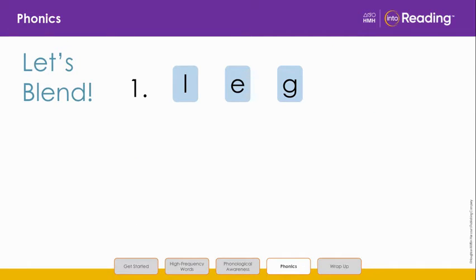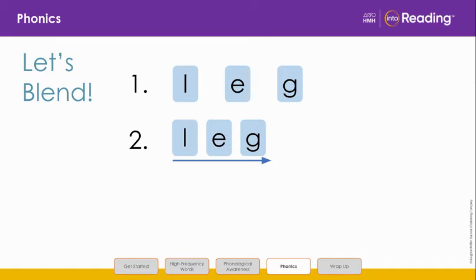We are going to blend the letters in line 1 to read a word. Say the letters and sounds with me: L, L, E, EH, G, G. This word has the consonant-vowel-consonant, or CVC pattern, so this tells us that the vowel sound will be short. Let's slide the letters L, E, G close together to form the word in line 2.